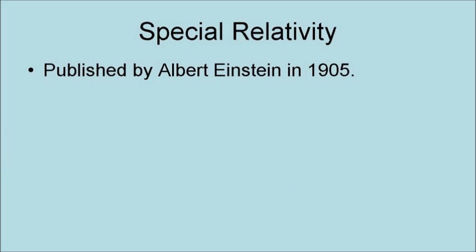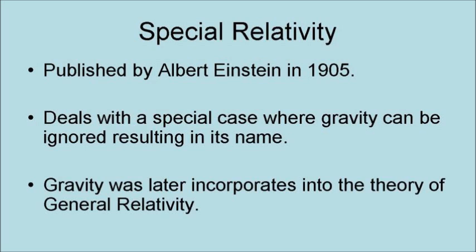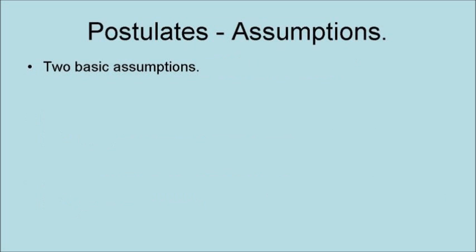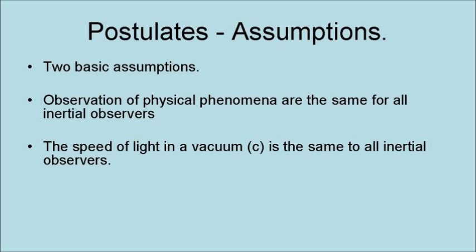Special relativity was published by Albert Einstein in 1905. It deals with the special case where gravity can be ignored, resulting in its name. Gravity was later incorporated into the theory of general relativity. It has two basic assumptions. The first is that the observations of physical phenomena are the same for all inertial observers. The second is that the speed of light in a vacuum is the same for all inertial observers.